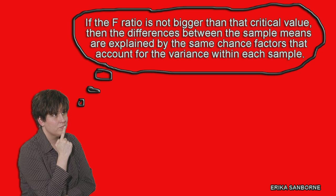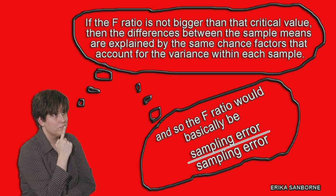Hold on. Did you catch that? Let's go back. I'm serious. If the F ratio is not bigger than that critical value, then the differences between the sample means are explained by the same chance factors that account for the variance within each sample. Get that. And so the F ratio would basically be sampling error over sampling error.